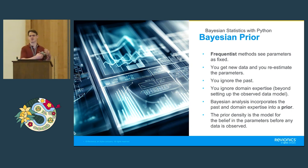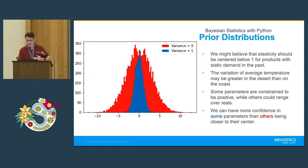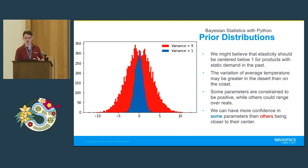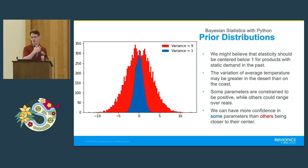You might have fit models previously to old data, but for the data you're analyzing now, you're taking things fresh with whatever you've folded into that prior density. For example, in retail modeling we might believe that an elasticity should be centered below one for products with static demand. Or if you're analyzing temperature data, you might think that if you're in the desert, you'll have more variation than on the coast — so when estimating a parameter like mean temperature, you'd want to consider that.